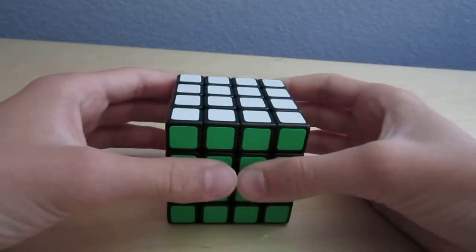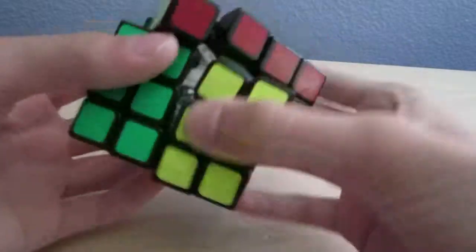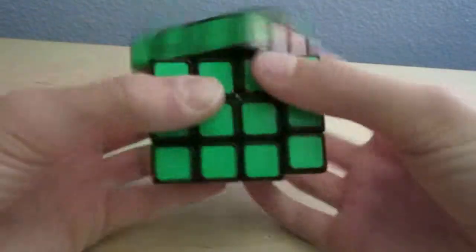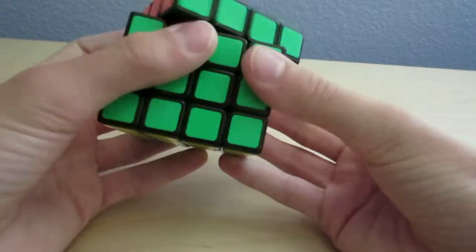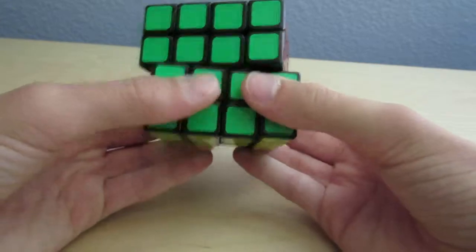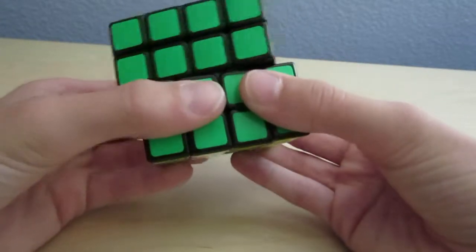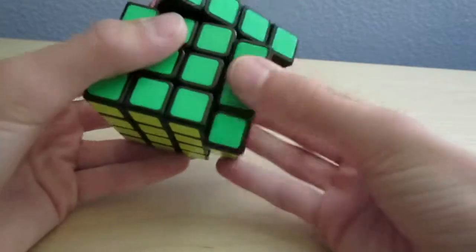And now 4x4 I use a Moyu Aosu 4x4. It's really fast, it doesn't pop very easily, corner cuts. It rarely ever locks up if it even does. The only way it would lock up or pop is if I did some extreme corner cutting.